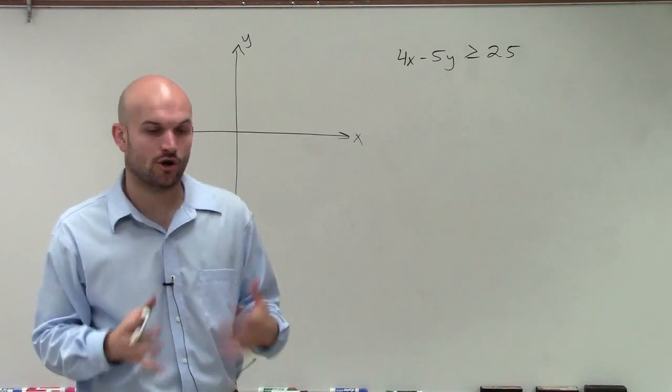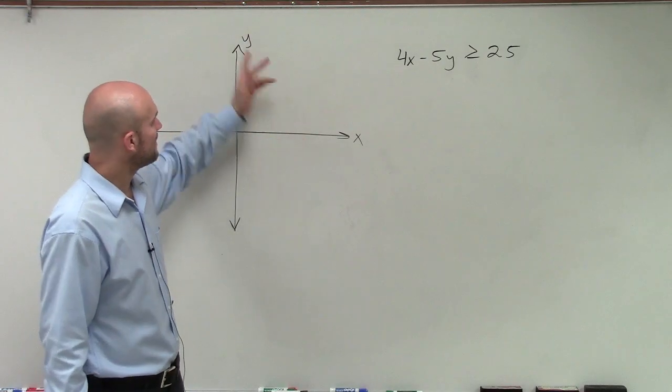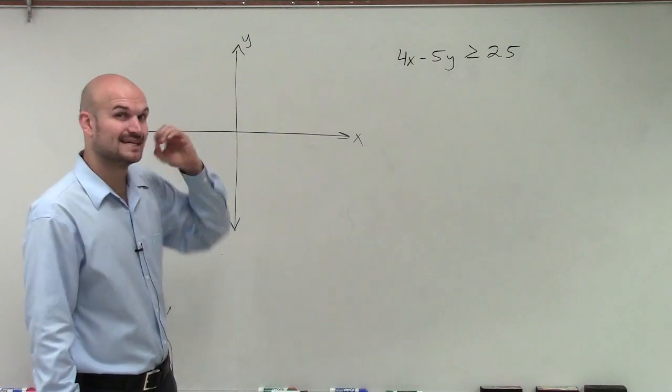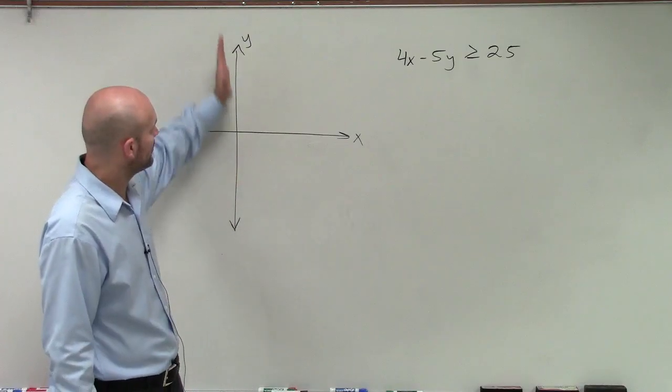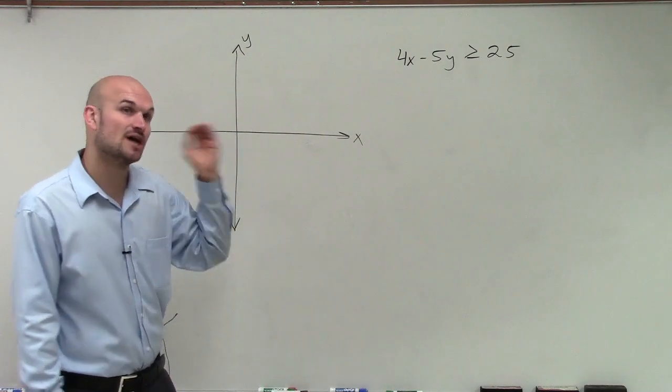And what's very nice to know about the x and y intercept is when I have a value of where this graph crosses the x-axis, my y value for that point is equal to 0. And when I have a point that crosses the y-axis, my x value of that point is also equal to 0.